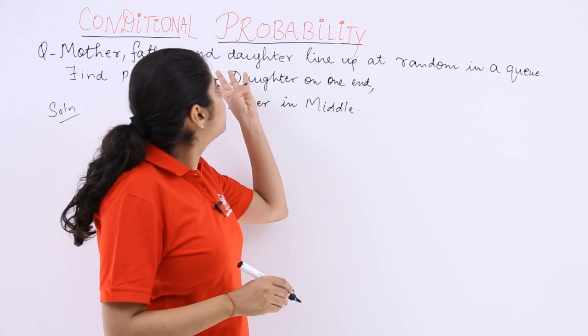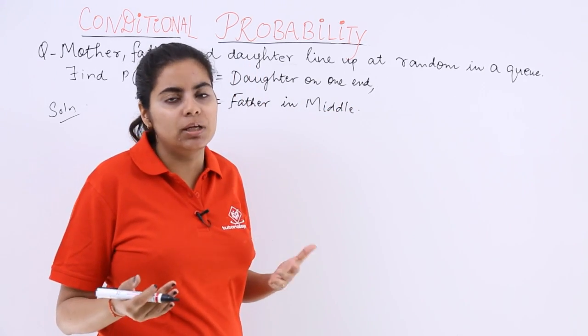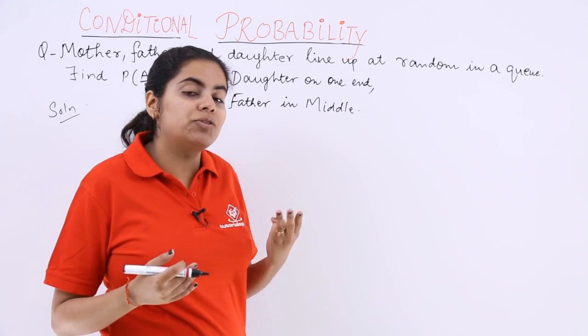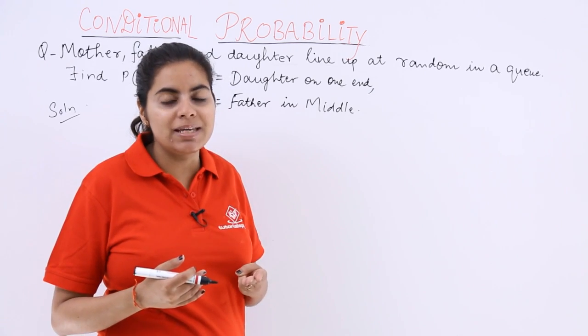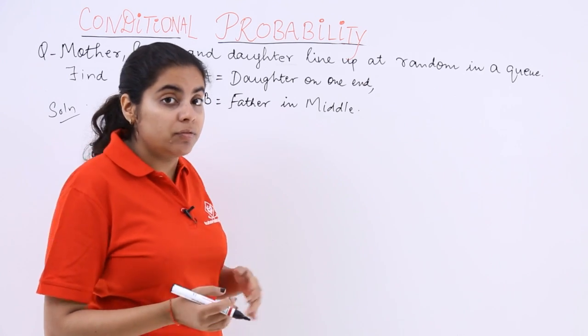See if 3 people are there, what could be the possible number of arrangements? They could be 3 factorial. If they are 3, they could be arranged in 3 factorial ways. These we know from permutations and 3 factorial is 6. If we want to check it.